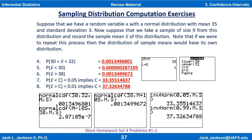Now we go back to our problems. The probability that x-bar is between 30 and 32 is just normalCDF with lower 30, upper 32, mean 35, but the standard deviation here is not 3 — it's 1, which is 3 divided by the square root of the sample size. The answer is 0.0013496801.